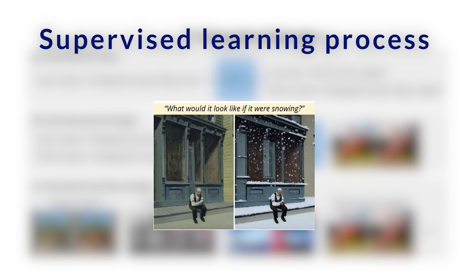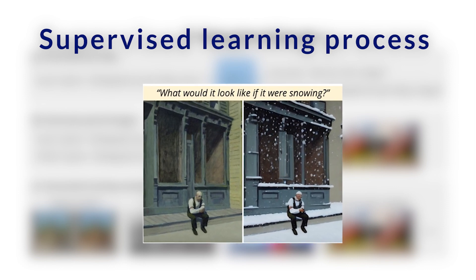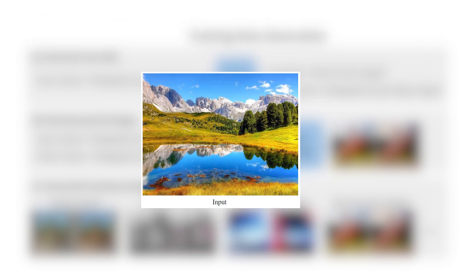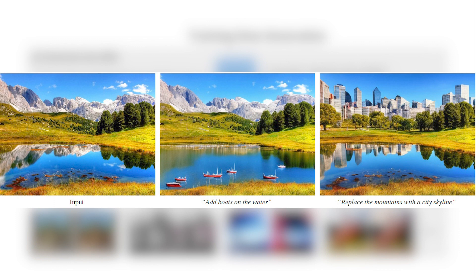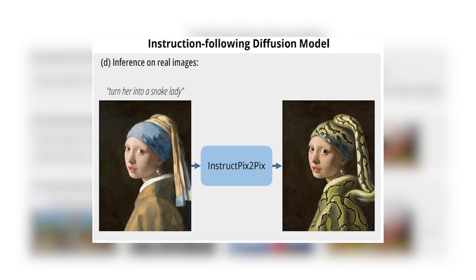It doesn't need to understand the images and the text — it just needs to understand that when the text says this, you modify this. It will have somewhat of an understanding of different concepts and will be super powerful for this specific editing task on data similar to the training set, but its level of understanding will be far from the individual models discussed. This entirely artificially created dataset is by far the coolest part of this project, but we still need a model to leverage that data. The one in question here is called InstructPix2Pix, and it's available for free online if you'd like to try it.